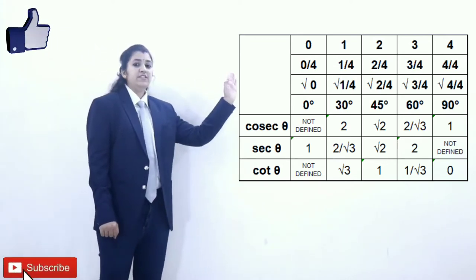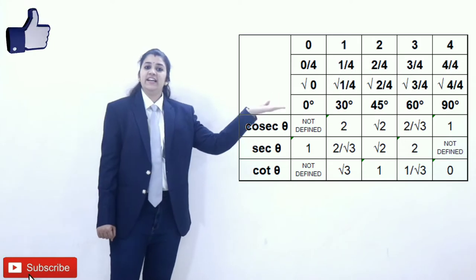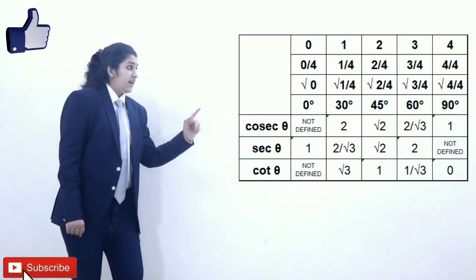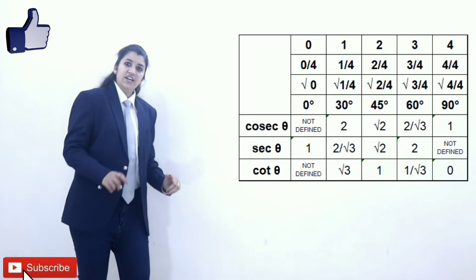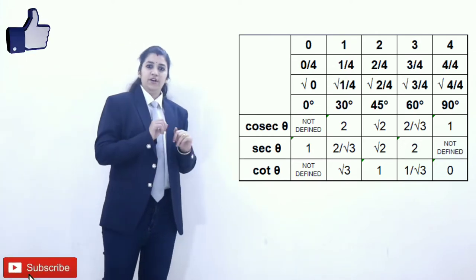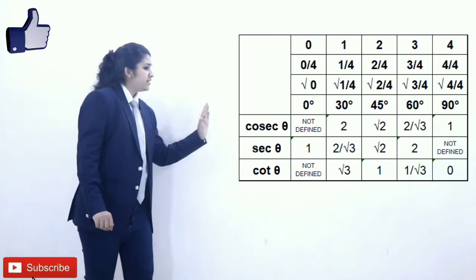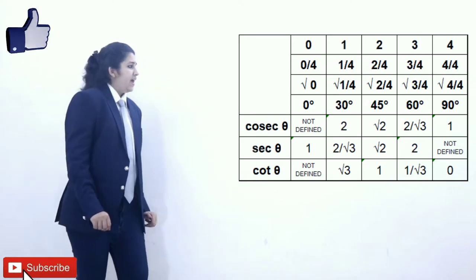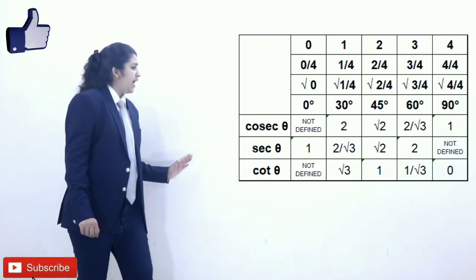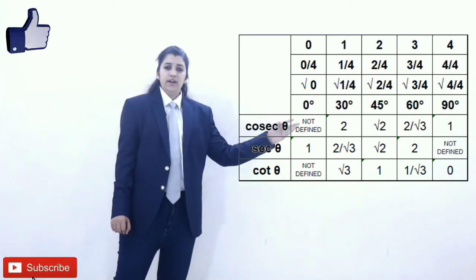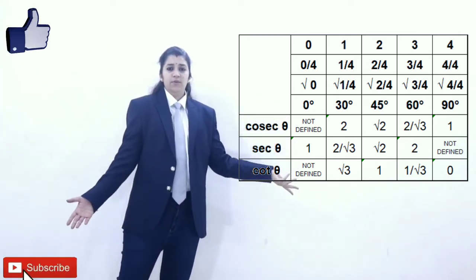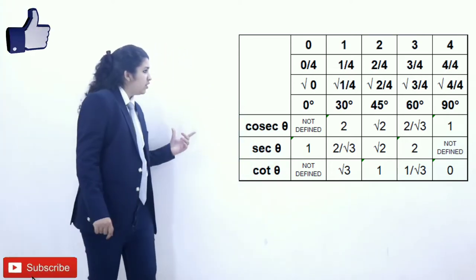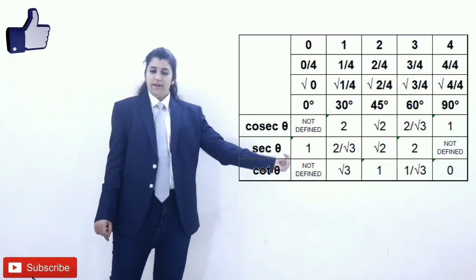Moving on further, we have sin 60 degrees, which is root 3 upon 2, so the reciprocal of root 3 upon 2 is 2 upon root 3. So cosec 60 degrees is 2 upon root 3. And last, sin 90 degrees is 1. The reciprocal of 1 is 1, so cosec 90 degrees is 1.